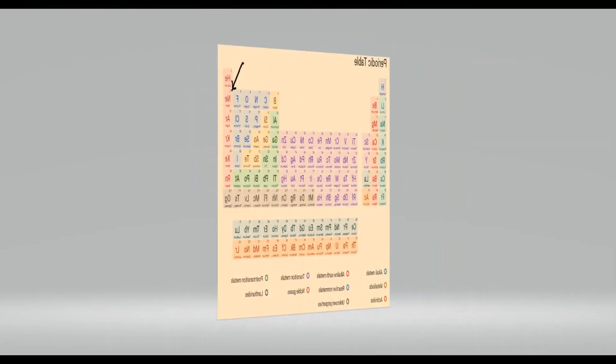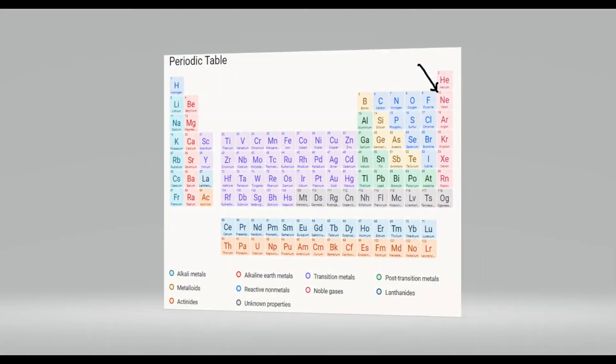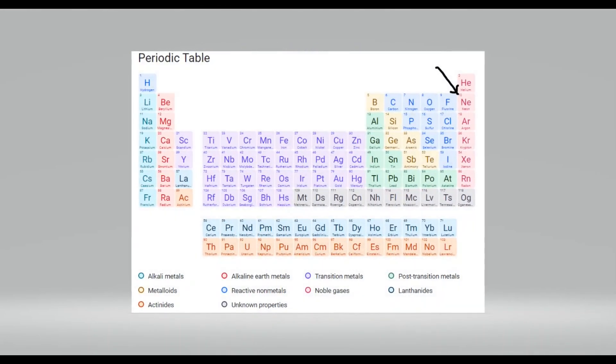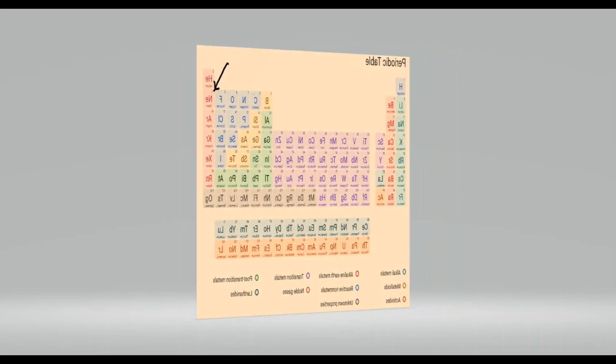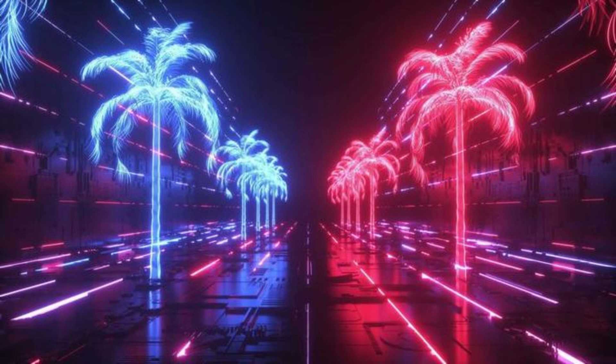It belongs to the noble gas group in the periodic table, characterized by its inertness and lack of reactivity under normal conditions. Here is a detailed overview of neon, covering its history, properties, applications, and potential dangers.